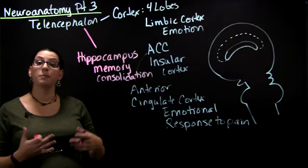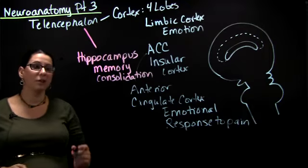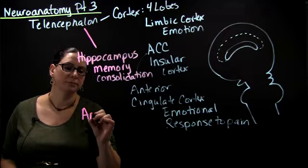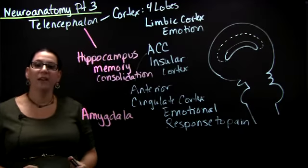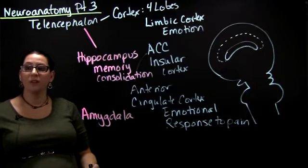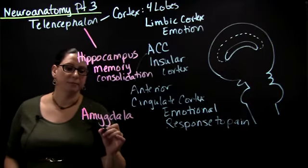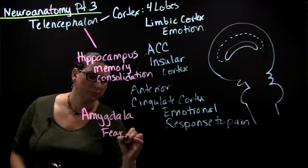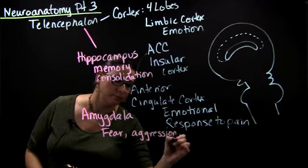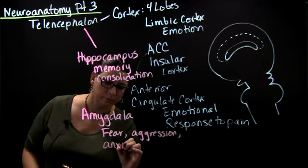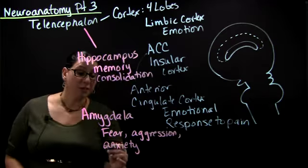Another telencephalon region that's part of the limbic system but isn't part of the cortex is the amygdala. The amygdala is really important in fear and aggression and anxiety, and also fear learning.